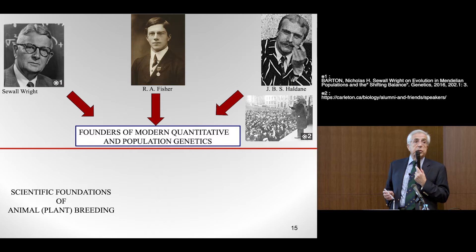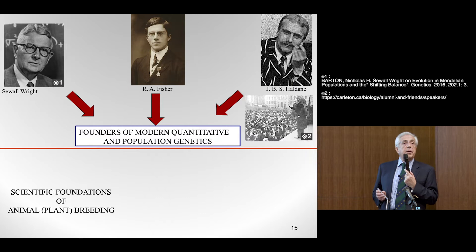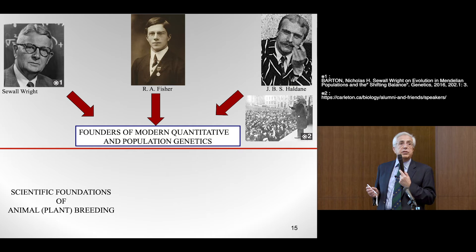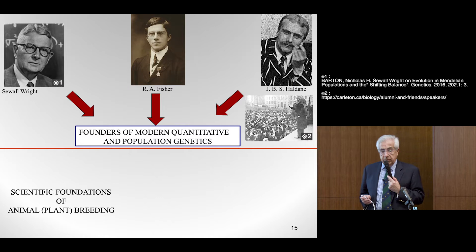Haldane and Wright were very humble and gentle persons. Fisher was the contrary — he was very rude and very arrogant. Haldane was perhaps the most interesting of the three. He was a political activist — here he's not lecturing in genetics, he was lecturing in London to tell the workers to join the revolution against the oligarchy and the bourgeois class. Because Haldane was a Marxist, he actually resigned his British citizenship, moved to India, and became an Indian citizen, but later on in his life he returned to Britain. In essence, these three people set the foundations.